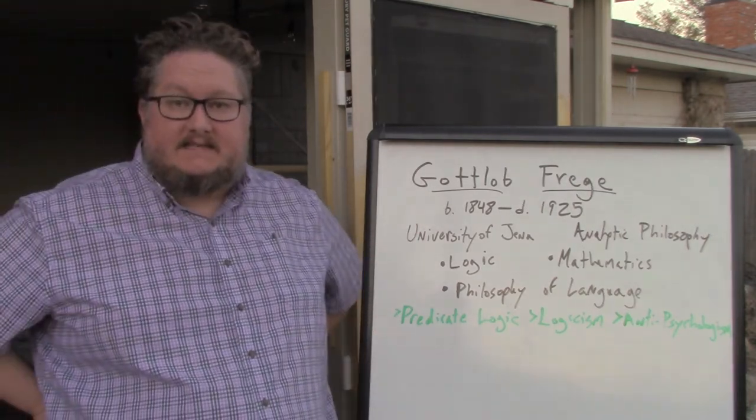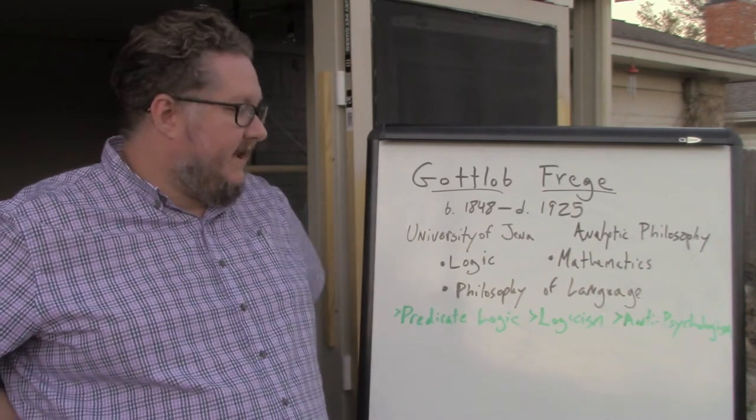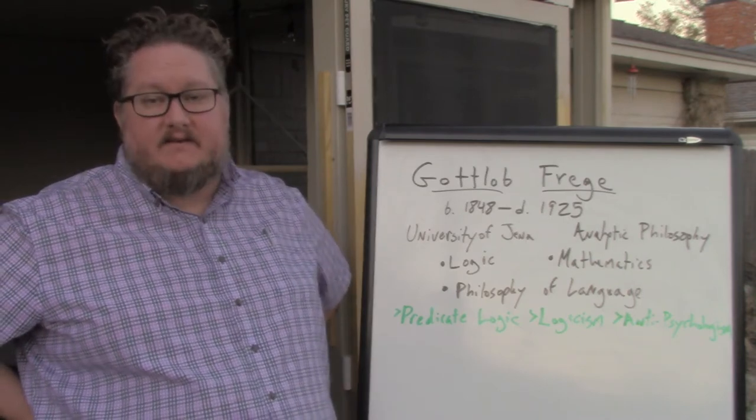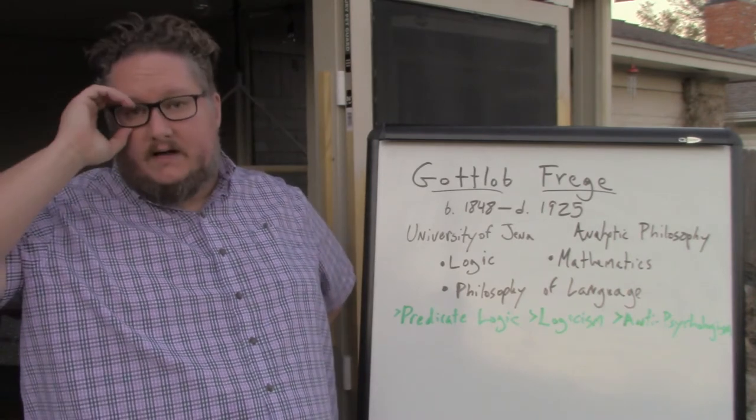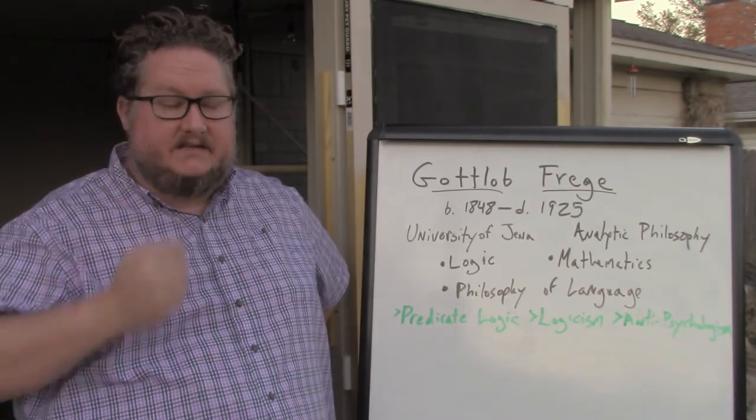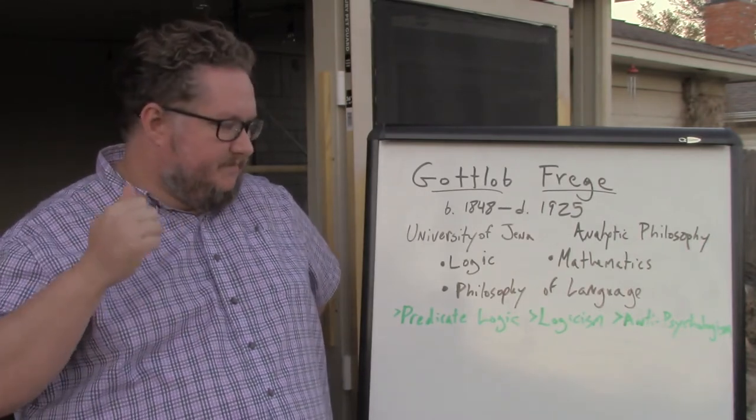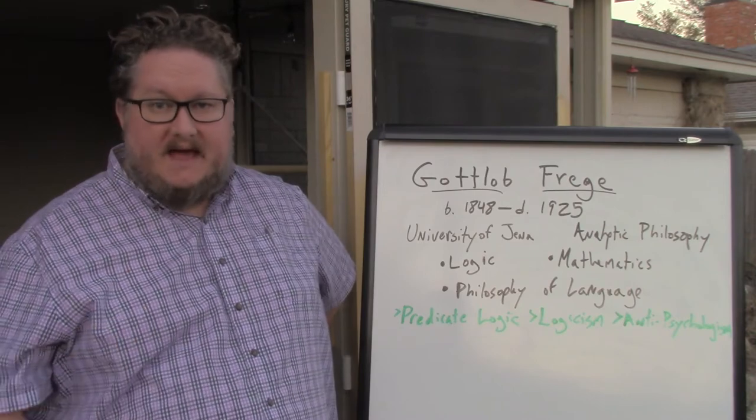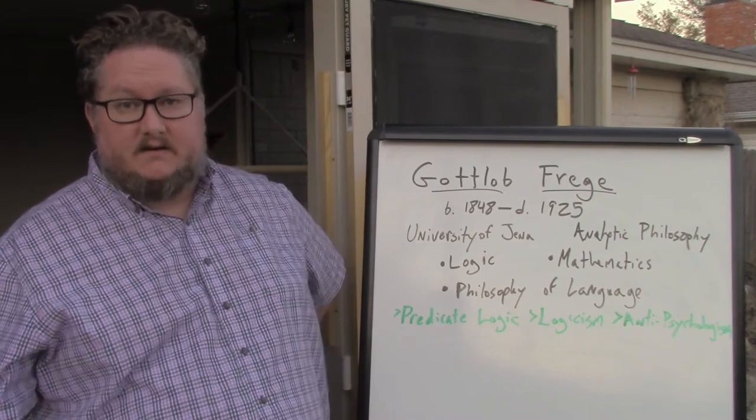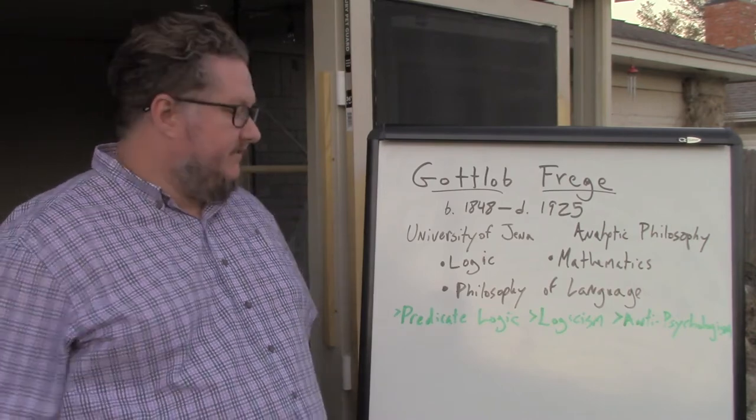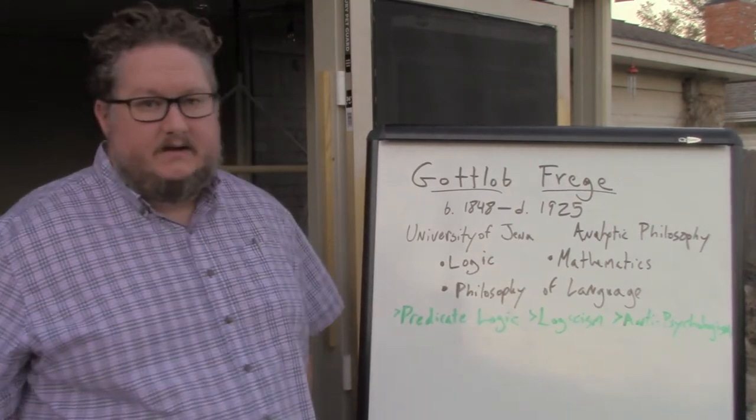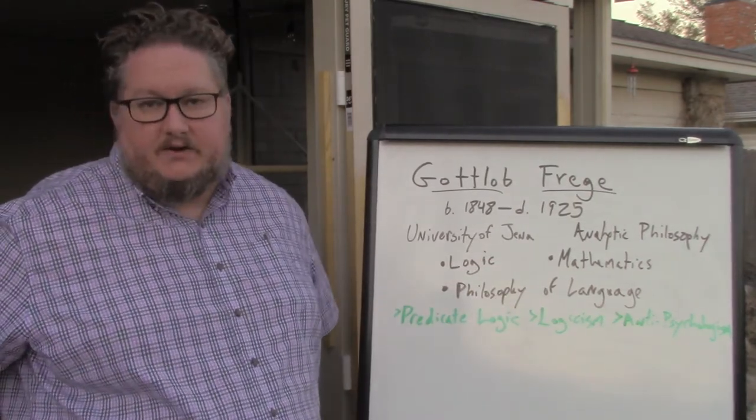Frege was a German philosopher, born in 1848, died in 1925. Frege was known as a logician, mathematician, and philosopher. He worked primarily at the University of Jena, which is in modern-day Germany.